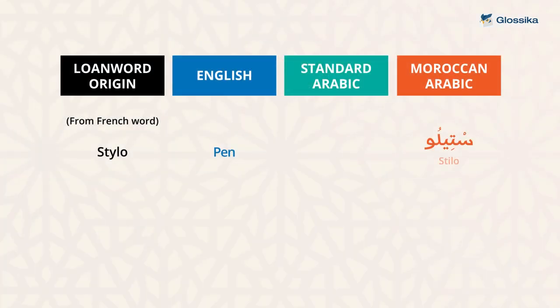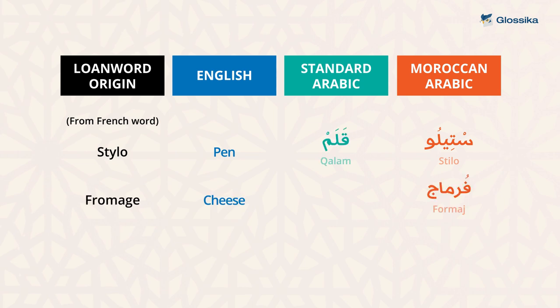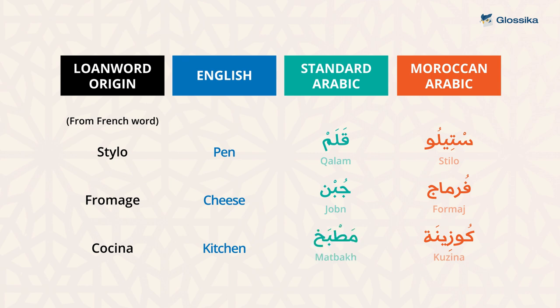For example, loan words from French: stylo, qalam. Formage, juban. Cozina, matbakh.